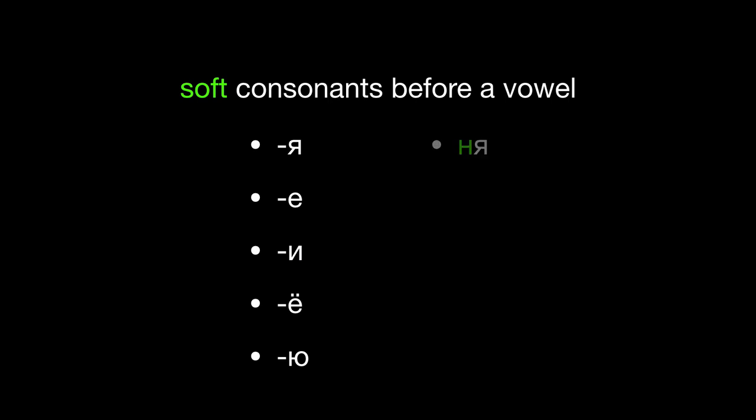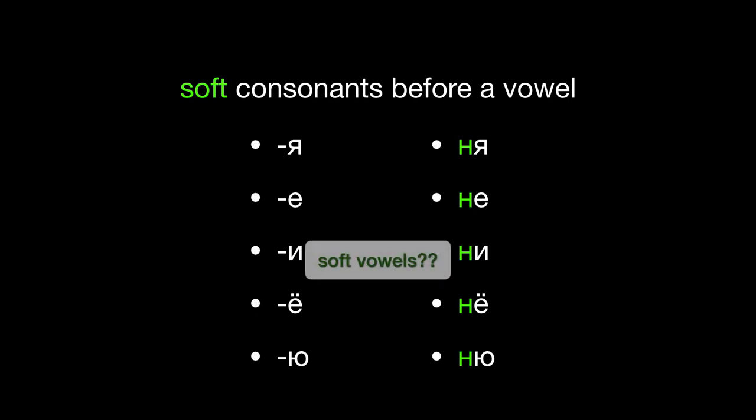Let's look at some examples: НЯ, НЕ, НИ, НЁ, НЮ. Some people call these letters soft vowels, but I don't like to think of it that way because the vowel sounds themselves are not soft. Rather, these vowel letters show that the preceding consonant is soft.